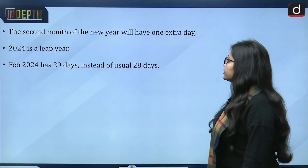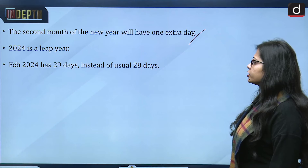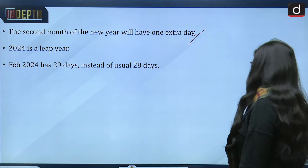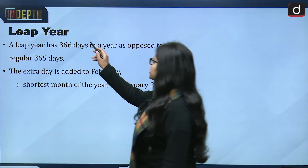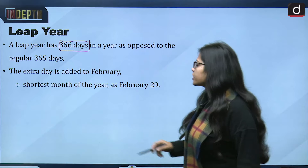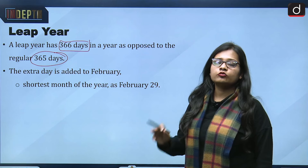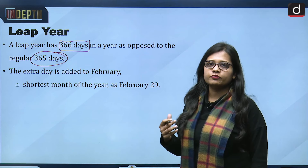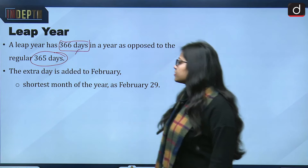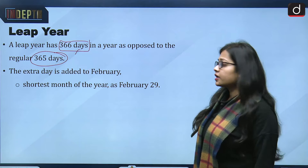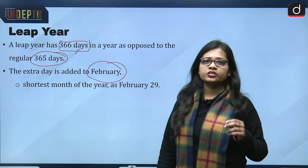So February 2024 has 29 days instead of the usual 28 days, making 2024 a leap year. A leap year has 366 days in a year as opposed to the regular 365 days. Because of one extra day in the month of February, the year is counted as 366 days. The extra day is added to February as it is the shortest month of the year.